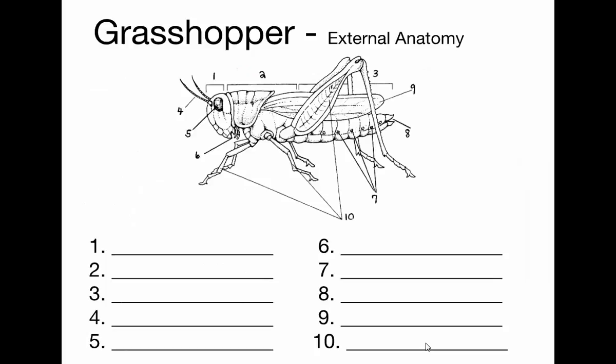Insects have three body sections. The first is the head, where the sense organs and mouth are located. The middle section — called the thorax — is where the digestive organs, wings, and legs are attached. The back section — the abdomen — contains the reproductive organs.